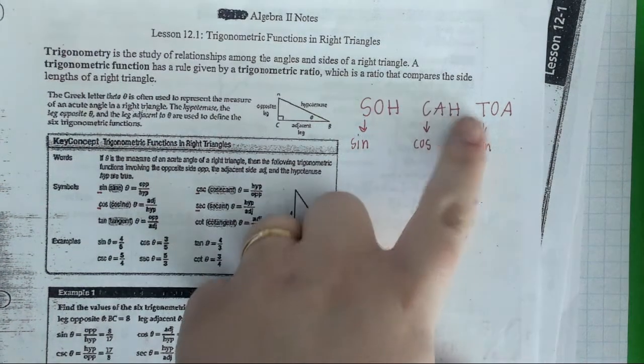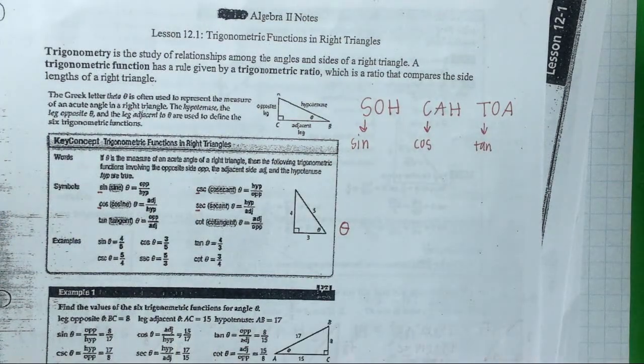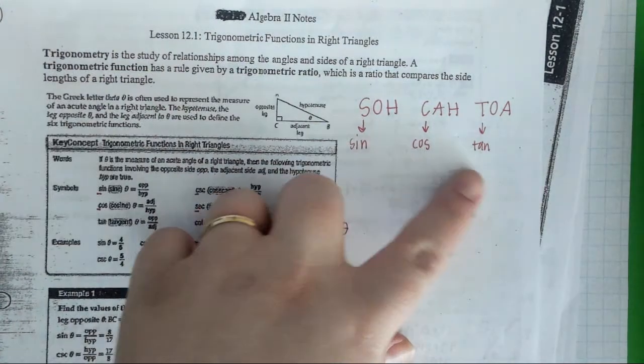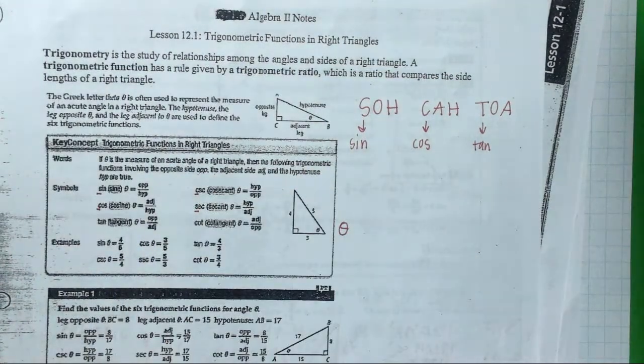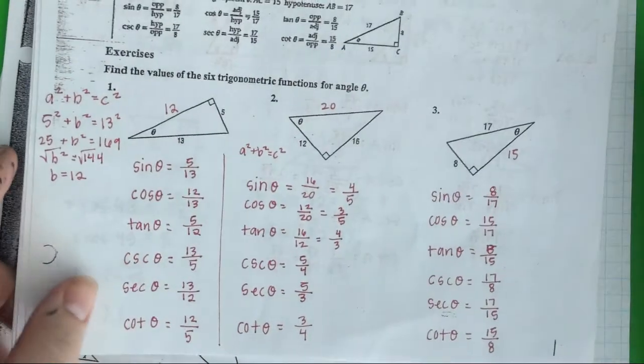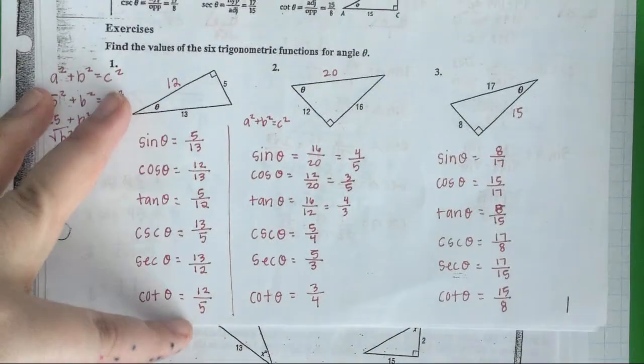If you don't know this acronym, I say SOHCAHTOA, some say SOHCAHTOA, tomato, tomato. You need to know it. It helps you think things through. There are six trig functions: sine, cosine, tangent, cotangent, cosecant, secant. Yes, you need to know those, especially on problems that say find all six, then you have to find them all.